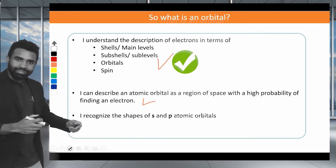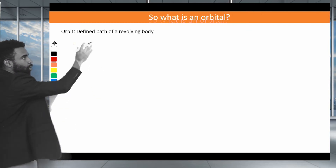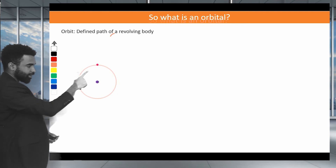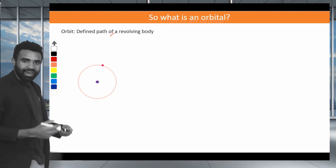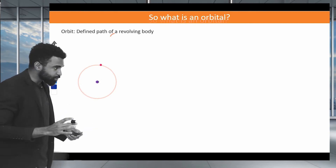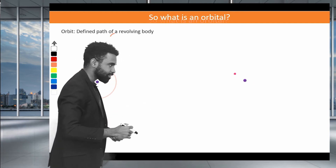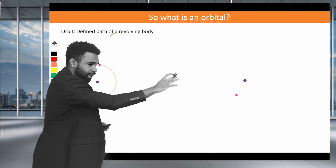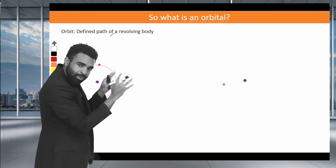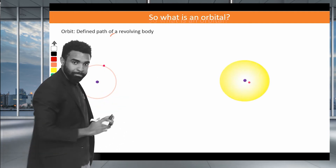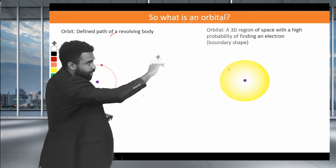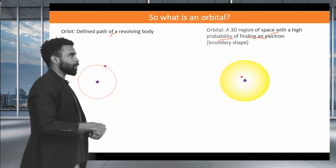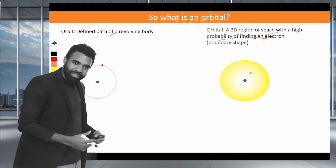Let's understand what an atomic orbital is. An orbit is a defined path of a revolving body — an electron circling a positive nucleus in a defined path. But this isn't actually how electrons move. Electrons move in a much more haphazard manner, going about like bees. However, over time if you observe an electron, you notice it tends to stay within a certain boundary shape — a 3D region which inscribes a high probability of finding an electron. That is what we call an orbital.